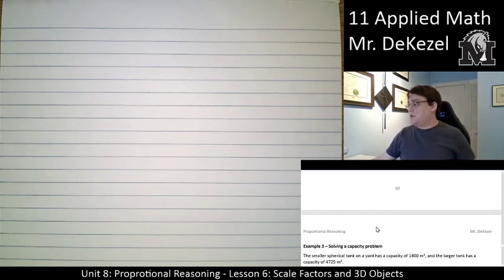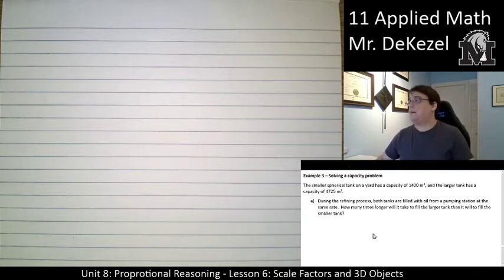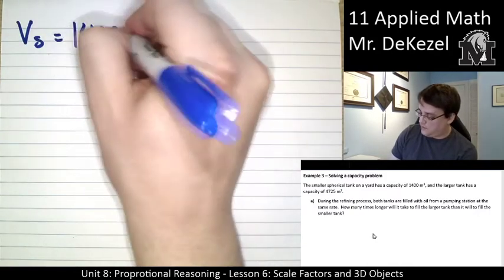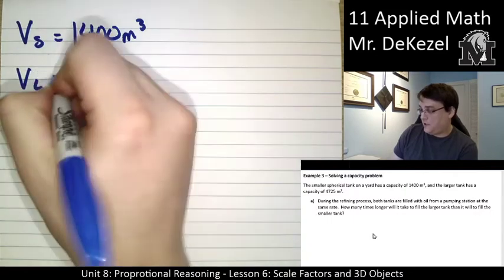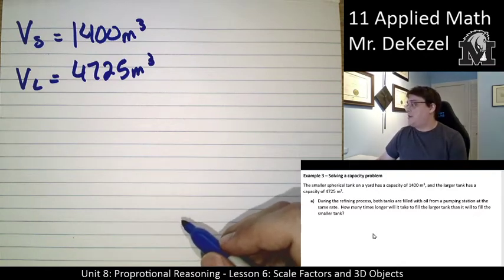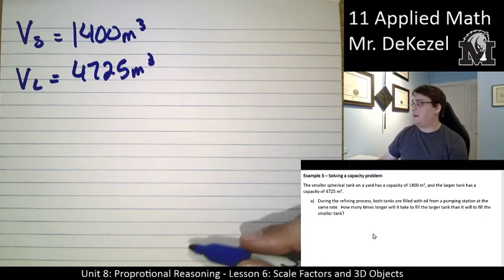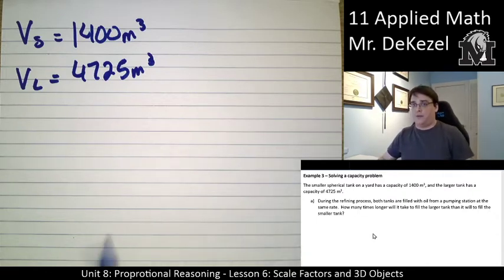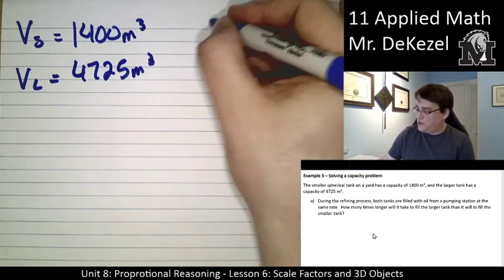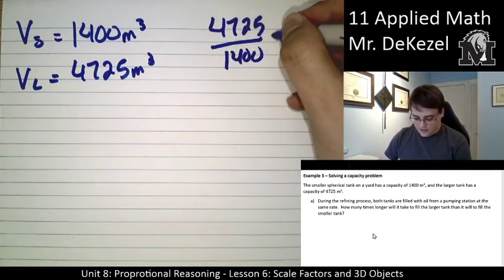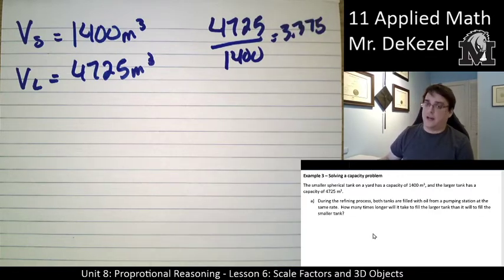We have one more problem and then your turn, I believe. And then we are done the unit. So, a smaller spherical tank on a yard has a capacity of 1,400 meters cubed. So, the volume of the small is 1,400 meters cubed. And the larger tank has a capacity, volume of large is equal to 4,725 meters cubed. Question. During the refining process, both tanks are filled with oil from a pumping station at the same rate. How many times longer will it take to fill the larger tank than it will to fill the smaller tank? So, essentially, they're going to fill at the same rate. We just want to find out how much larger the larger one is than the small one. So, I would take 4725 and divide it by 1,400. So, you get 3.375. So, it will take a little over three times as long.